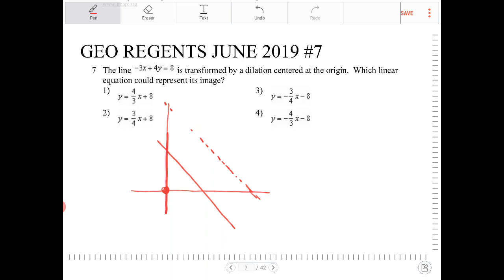Because of this, what we want to look for to answer this question, we want to look for lines that will have the same slope as the line that's given.